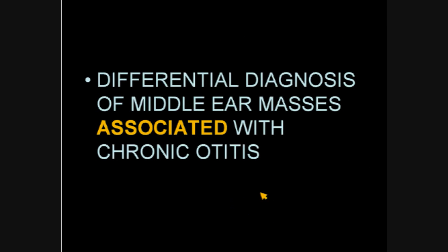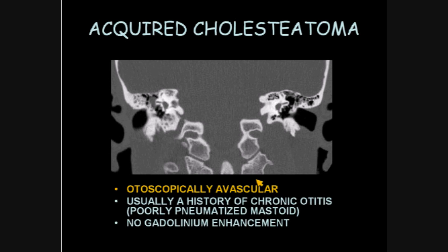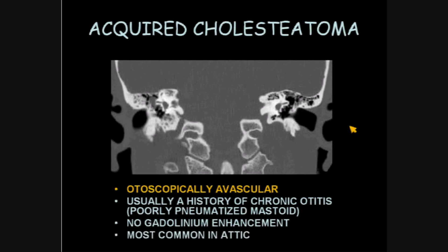Differential diagnosis of middle ear mass associated with chronic otitis — no lecture on the temporal bone would be complete without at least mentioning acquired cholesteatoma. These are otoscopically avascular. There usually is a history of chronic otitis and a poorly pneumatized mastoid. There's no gadolinium enhancement. They're most commonly located in the attic.